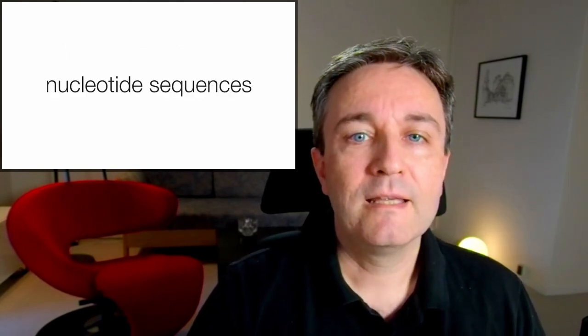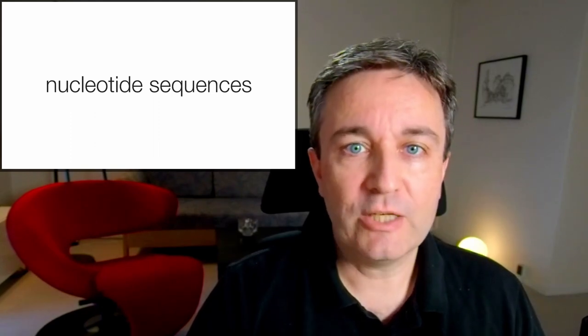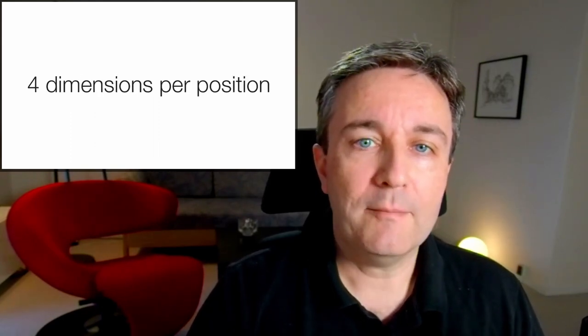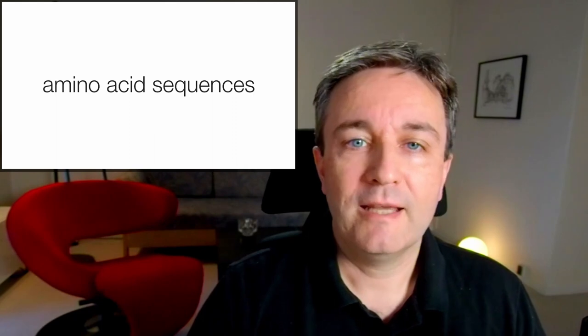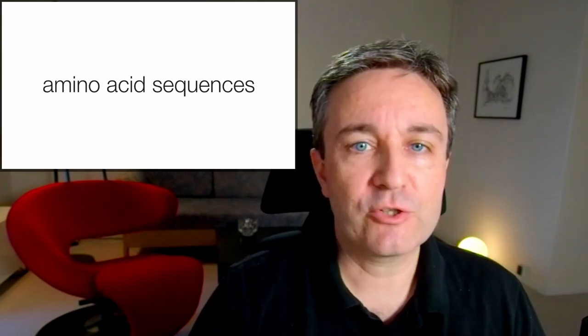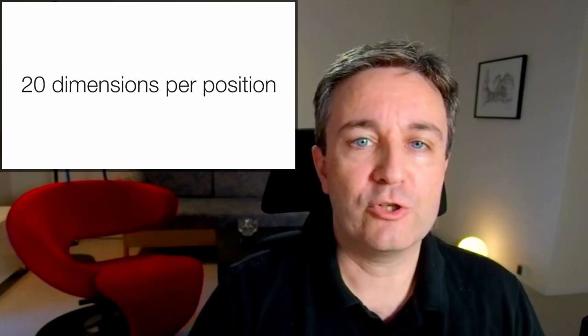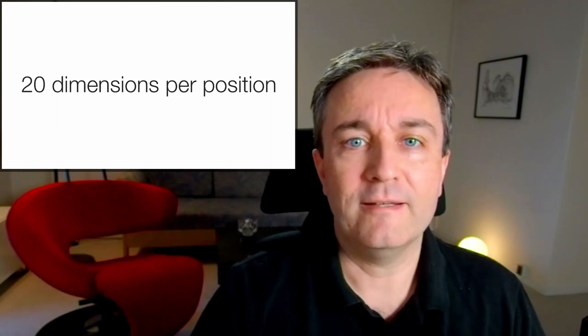If we have a nucleotide sequence, we can encode the letter G by the vector 1-0-0-0. We can encode A as 0-1-0-0, T as 0-0-1-0, and C as 0-0-0-1. This means that for nucleotide sequences, we need four dimensions per position. And if we're working on amino acid sequences, we need 20 dimensions per position, since we have 20 different amino acids.